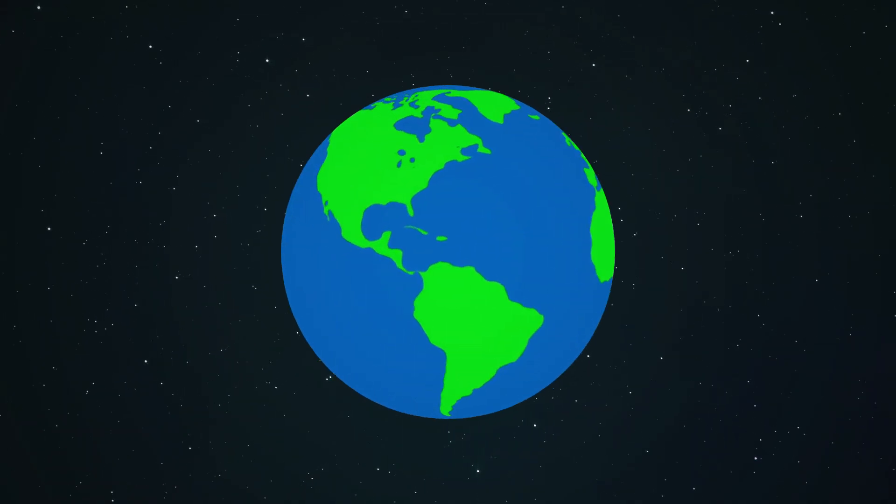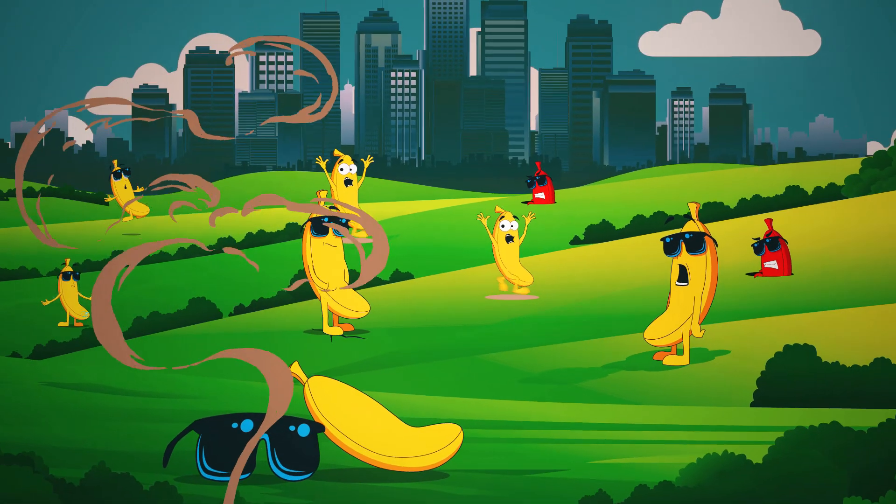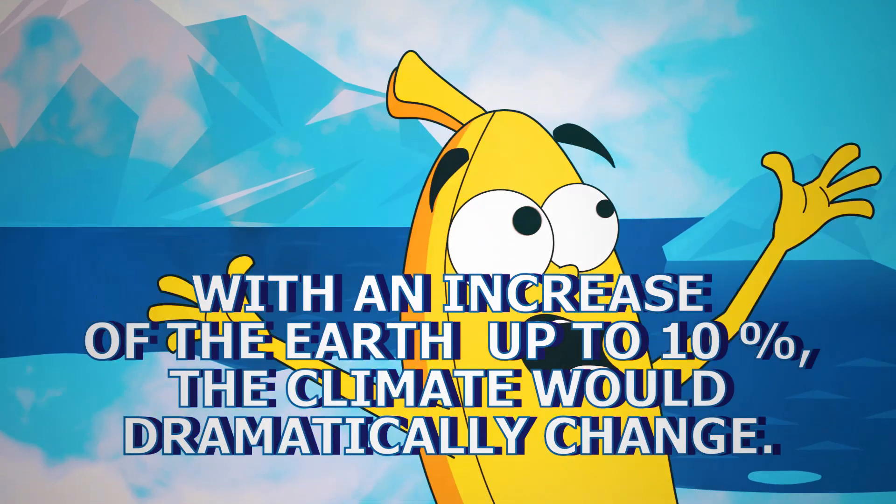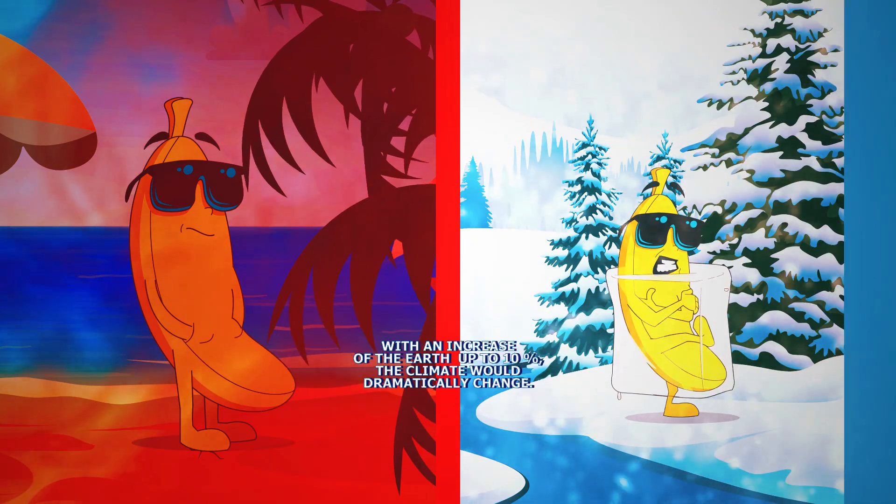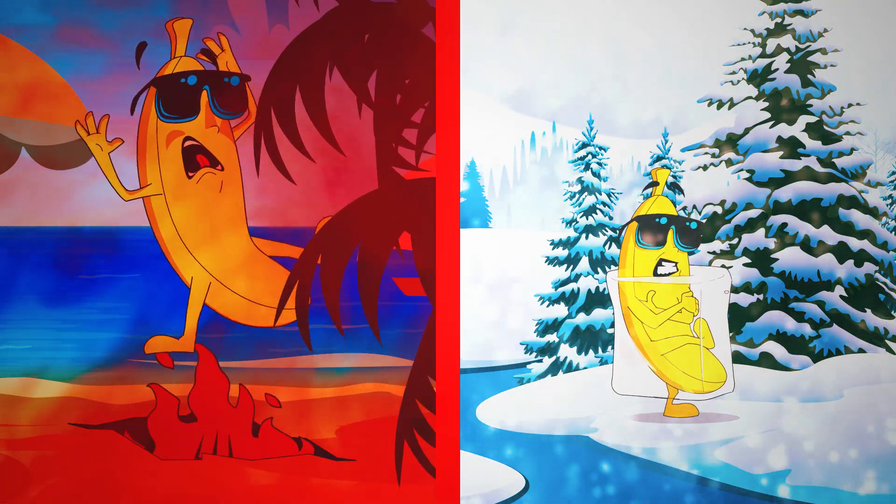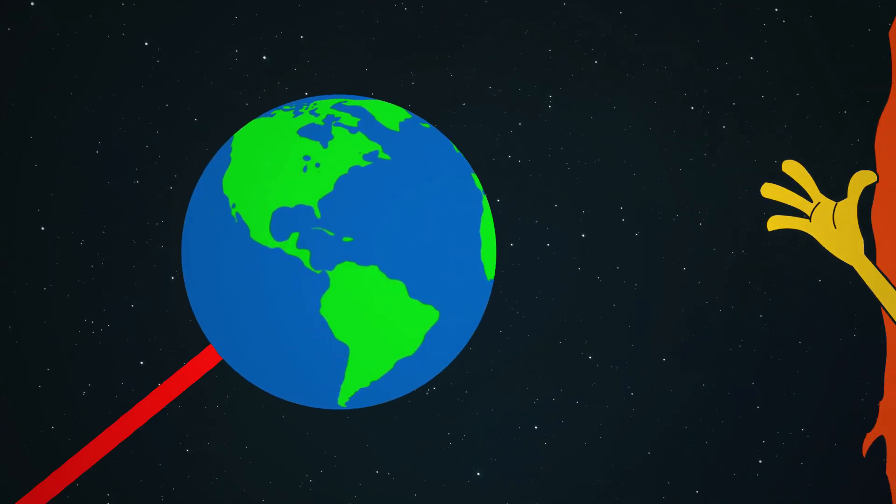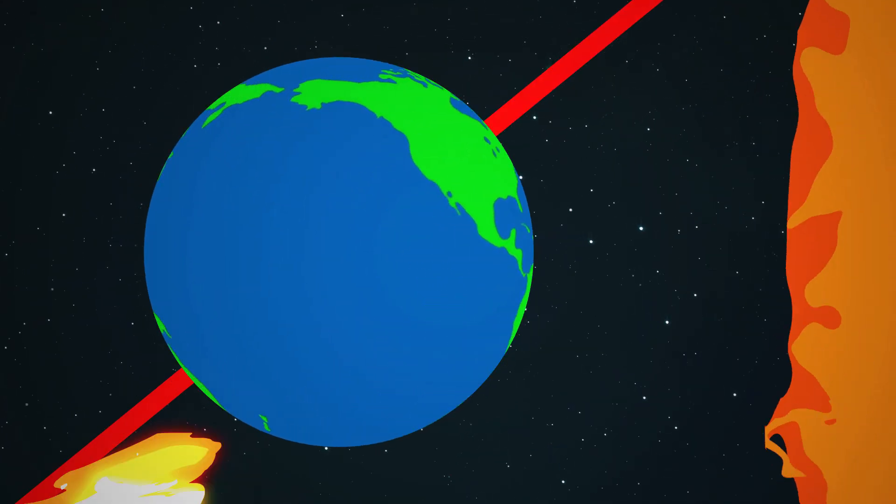As our planet began to swell, we would feel stranger and stranger. With an increase of the Earth of up to 10%, the climate would dramatically change. Summer and winter would be many times more severe than it is now. This would happen because the increase in mass of the planet would entail a change in its orbit around the Sun.